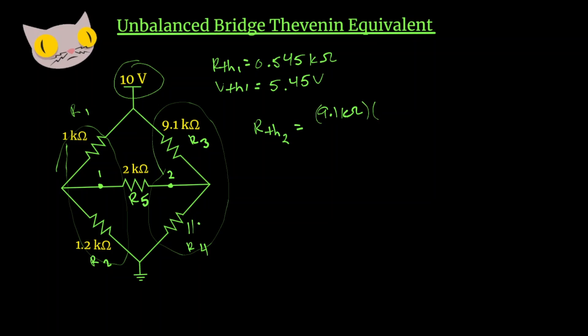We'll call this Rth2 and we have 9.1k ohms times 11k ohms over 9.1k plus 11k ohms. And that's going to give us about 4.98k ohms.